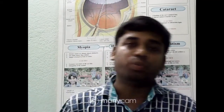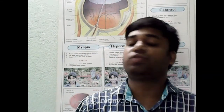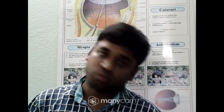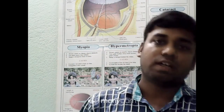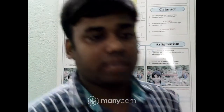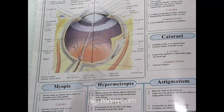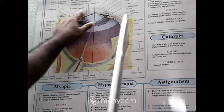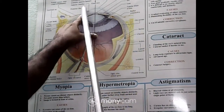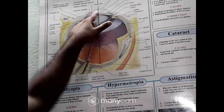We know that the eye is the most beautiful organ in our body. Some parts are to be discussed here. First of all, that is the cornea. The outermost part of the eye — that part is called cornea.